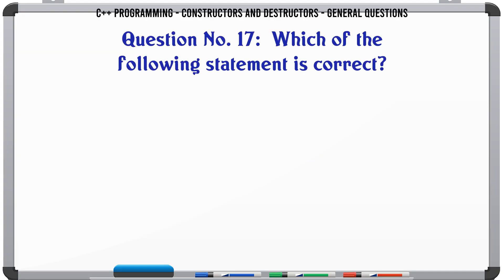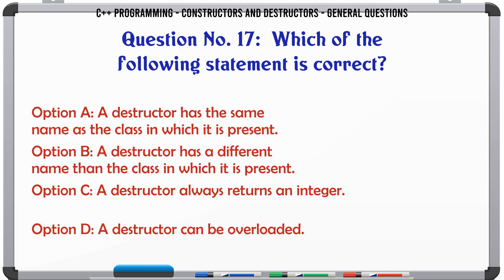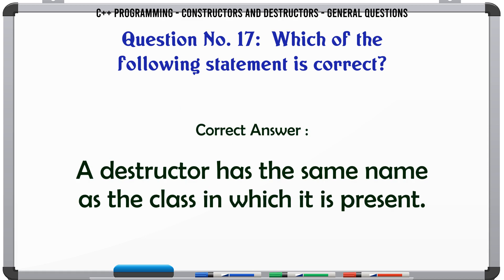Which of the following statements is correct? A. A destructor has the same name as the class in which it is present. B. A destructor has a different name than the class in which it is present. C. A destructor always returns an integer. D. A destructor can be overloaded. The correct answer is A: A destructor has the same name as the class in which it is present.